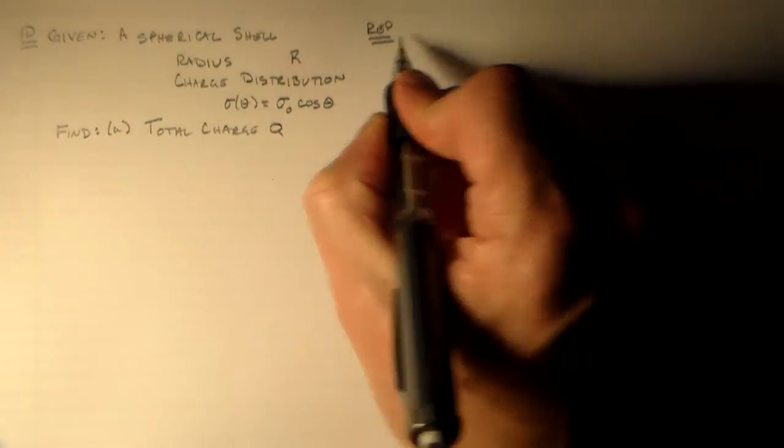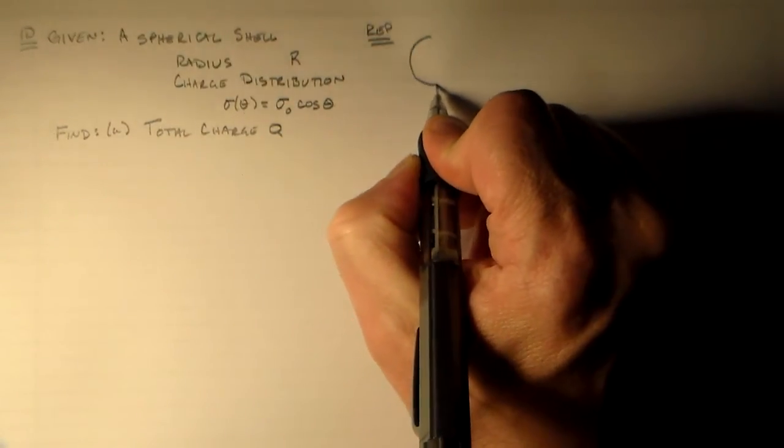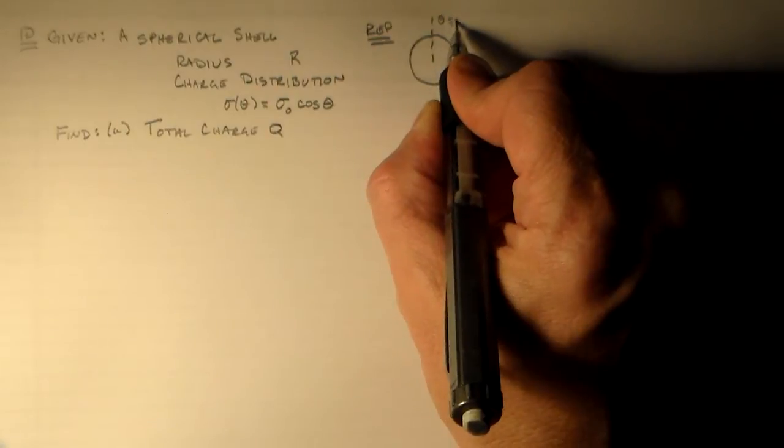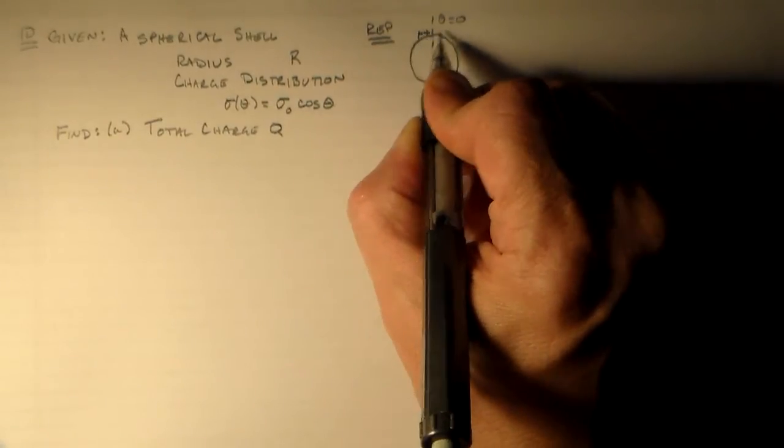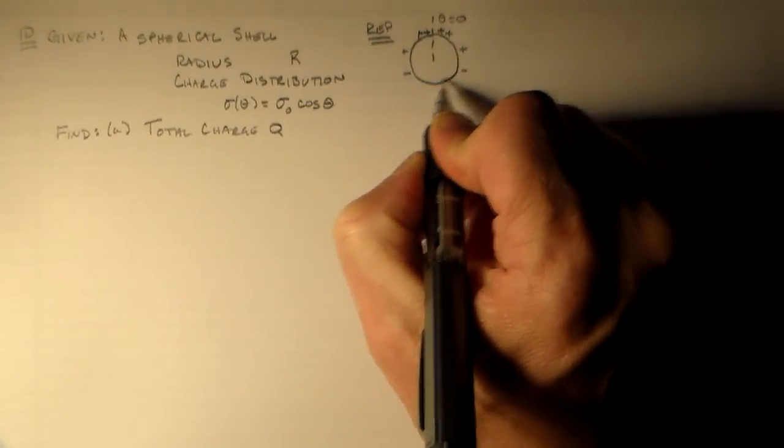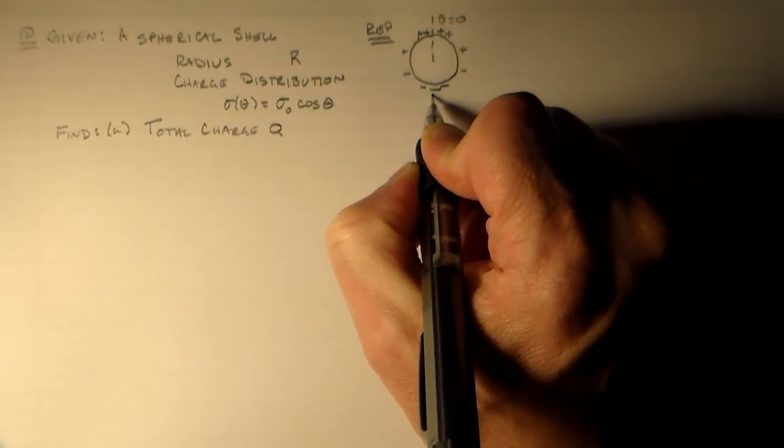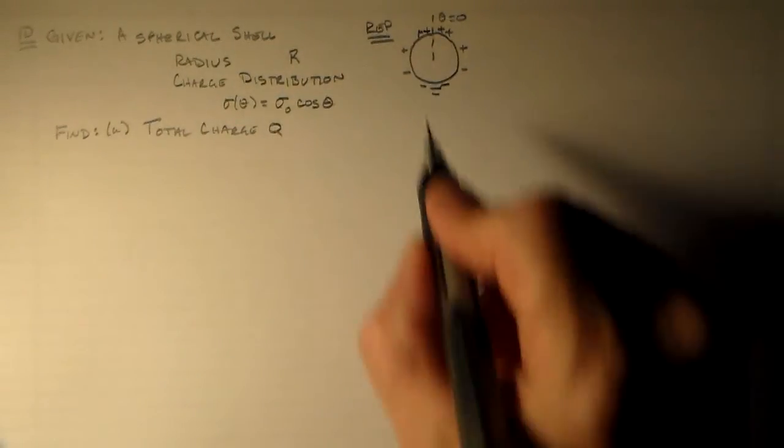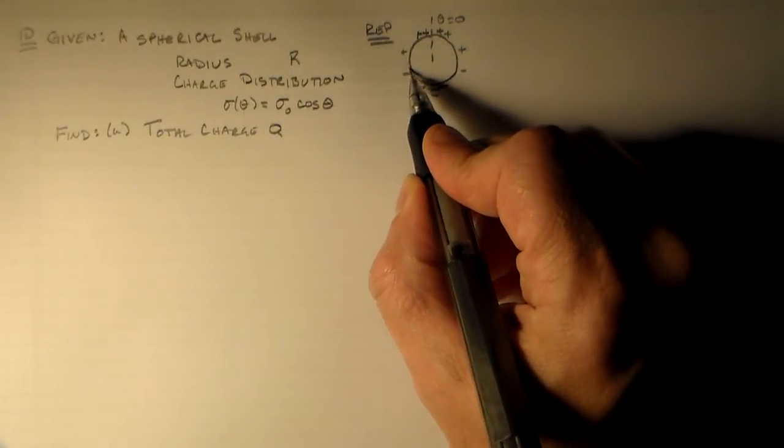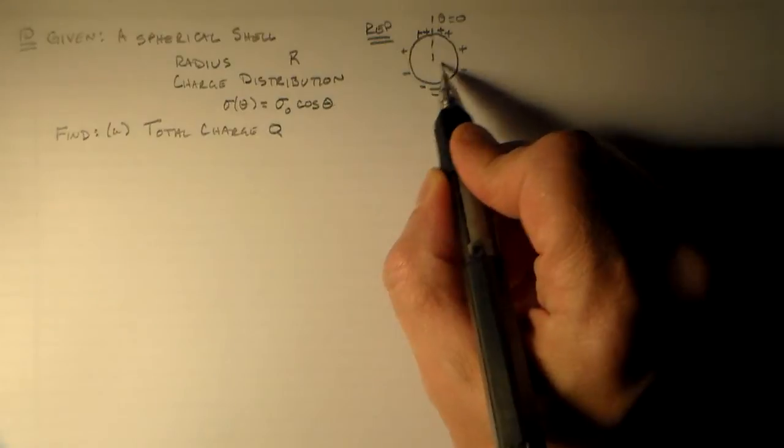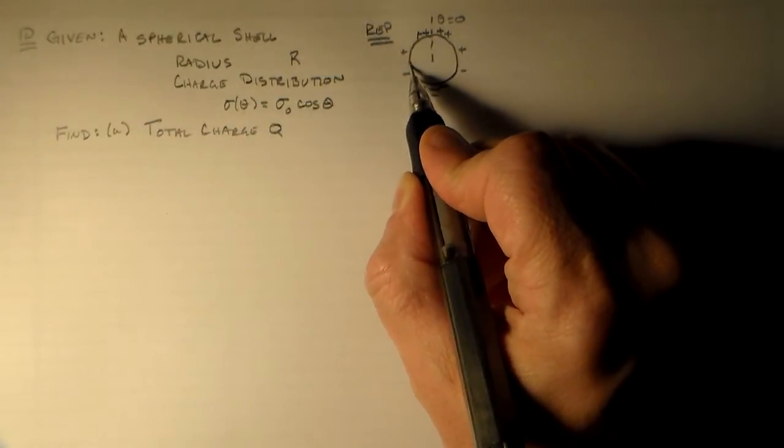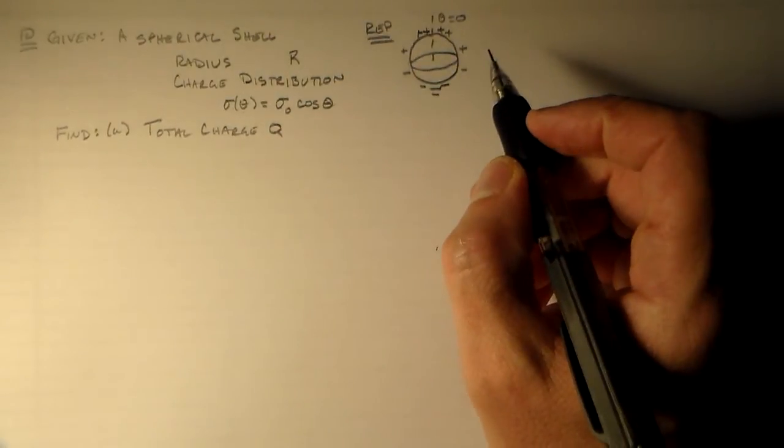So that sort of looks like this. Got some sort of spherical shell. We've got some direction theta equals zero. And we've got a lot of positive charge up at the top, a little less on the sides. And it goes all the way until it gets a lot of negative charge on the bottom. So we've got some sort of spherical shell, just this surface here. There's nothing on the inside. There's no charge on the inside, just on the surface, which is a 3D surface.